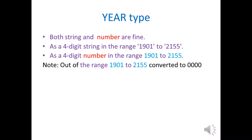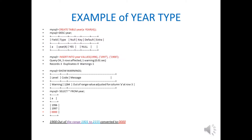In the year type, we should notice there is a time range between 1901 to 2155. If out of this range, the input will be converted to zero.